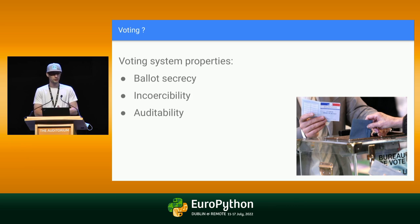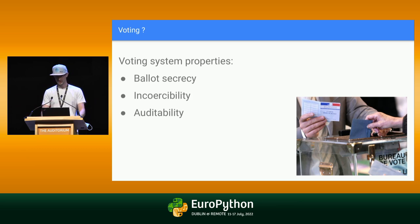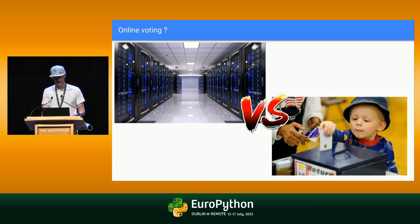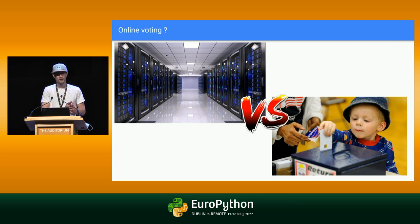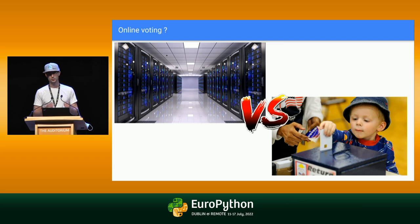Something else is what they call auditability. Basically, you need to be able to do the ballot counting, and it's better if there are a lot of different parties involved. All those properties are not perfect when you do physical voting, but it kind of works. There are issues, but it's okay. With online voting, it makes things really, really complicated.